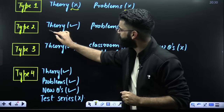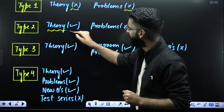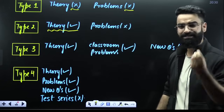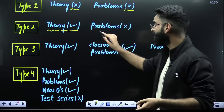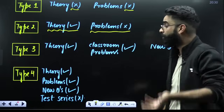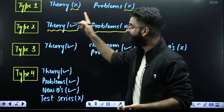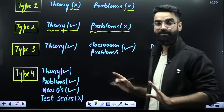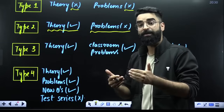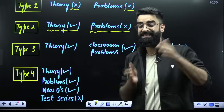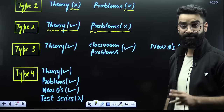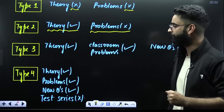Type 2 students will be good at understanding the theoretical part of physics, but they won't be good at doing the problems. They won't be able to apply the theory into the problems or solve questions of the same concepts discussed in the theoretical part. That is type 2.